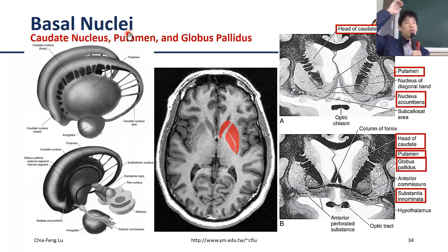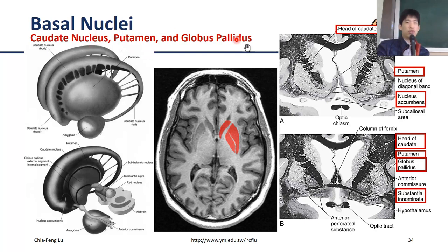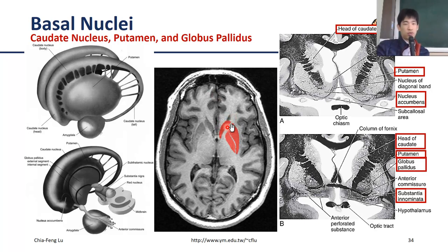The final structure you need to know is the basal nuclei, or sometimes called basal ganglia. At least three regions need to be memorized, as they are very commonly discussed in fMRI analysis. The first one, close to the anterior horn of the lateral ventricle, is the caudate nucleus.